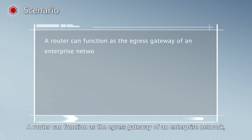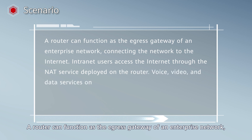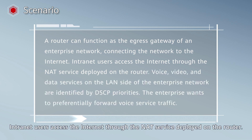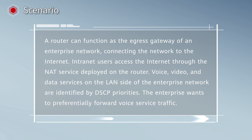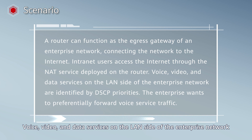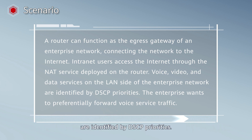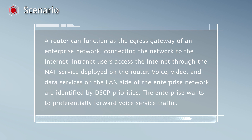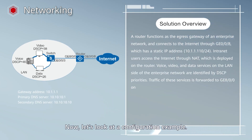A router can function as the egress gateway of an enterprise network, connecting the network to the Internet. Intranet users access the Internet through the NAT service deployed on the router. Voice, video, and data services on the LAN side of the enterprise network are identified by DSCP priorities. The enterprise wants to preferentially forward voice service traffic. Now let's look at a configuration example.